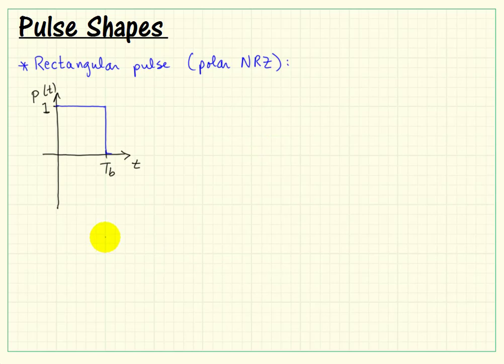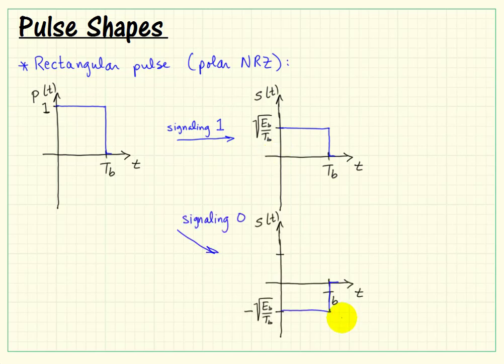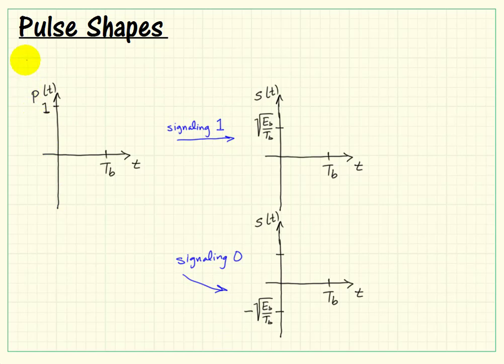Let me consider the rectangular pulse of the polar NRZ style in a bit more detail. When signaling a one, we set this up with the particular constant, square root of the energy per bit divided by bit interval, which gives us appropriate amplitude scaling. If we're signaling a zero, then we produce the negated version of that pulse.